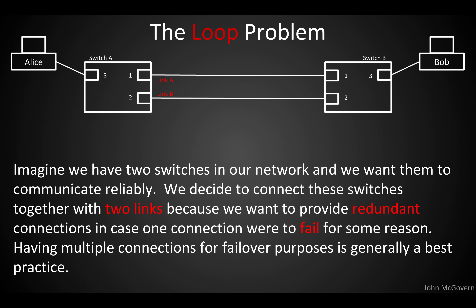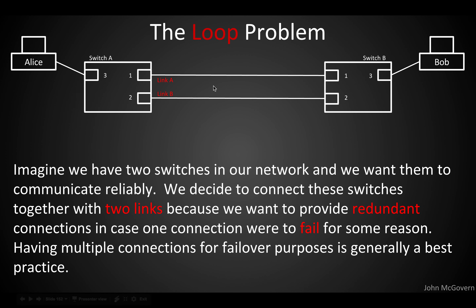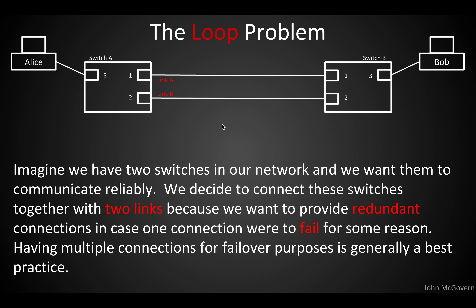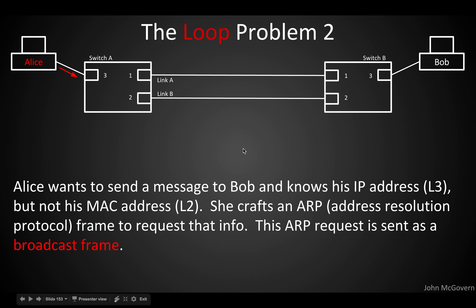Let's talk about spanning tree first. Imagine we have two switches — switch A on the left and switch B — and we want them to communicate reliably. 'Reliably' is the key word here, so we decide to connect these switches with two links. If one link fails, say link A, you'll still have link B for these switches to communicate over, and you can repair link A.